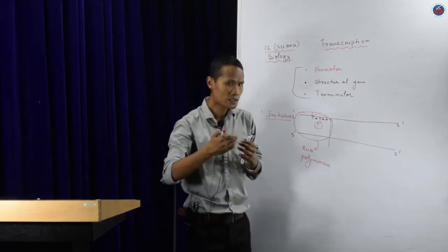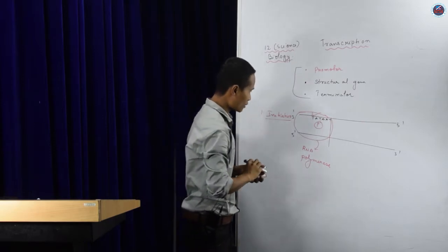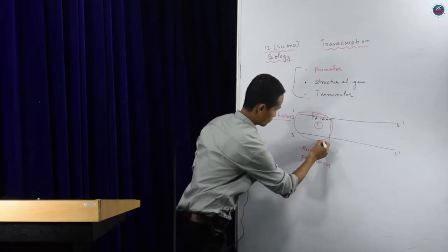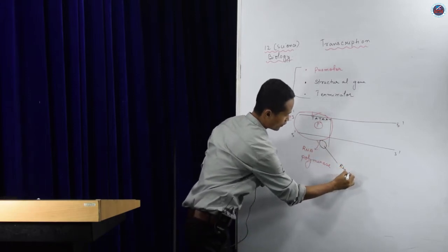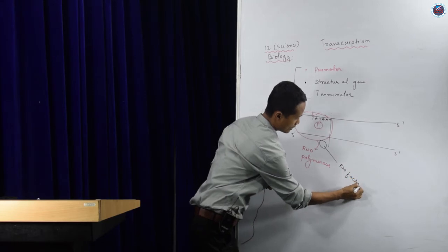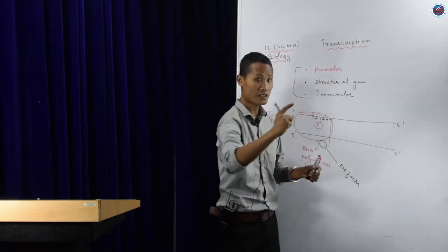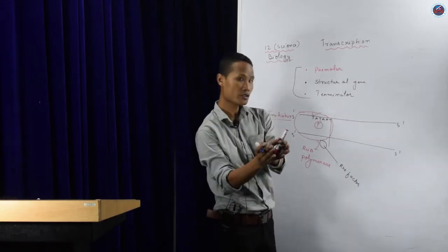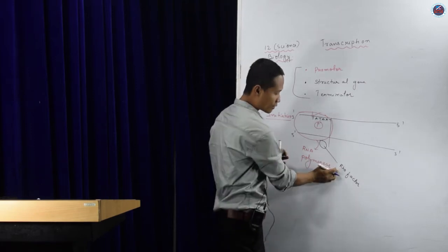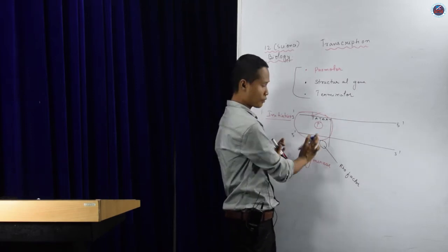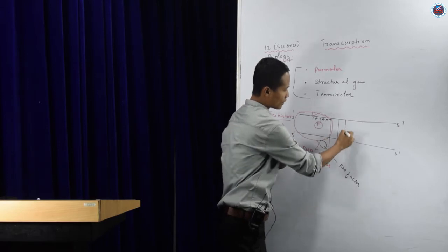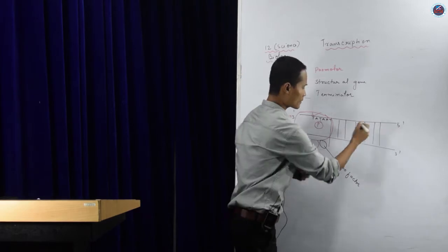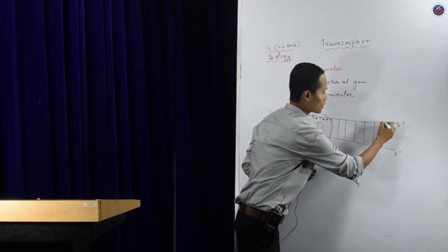Once initiation has been done, there will be another protein called the rho factor. The two functions of rho factor are elongation and termination. To start the process, the rho factor has to bind to the RNA polymerase. Once it binds, we have the nitrogenous base sequences, and this region is the terminator region.